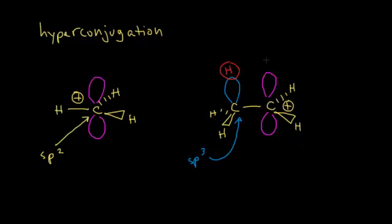We've now bonded our carbocation to a methyl group. This alkyl group stabilizes the carbocation by donating some electron density from its sigma bond. There are electrons in this sigma bond, and some of that electron density can be shared into the empty p orbital. Since that carbon is positively charged, the negatively charged electron density is attracted to it and helps stabilize the positive charge. This is hyperconjugation — the more alkyl groups you have, the more electron density from sigma bonds can be shared with the empty p orbital, and therefore the more stable your carbocation.